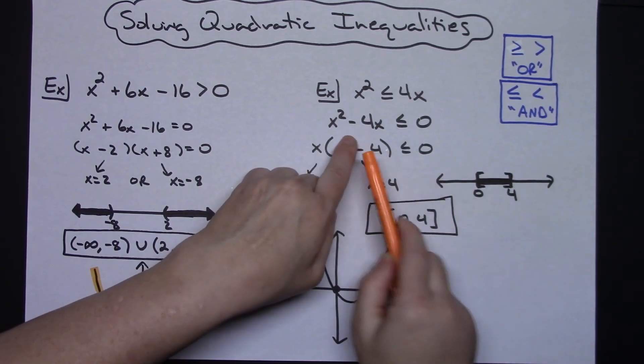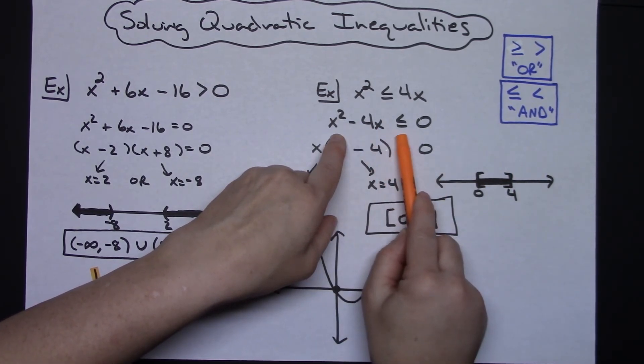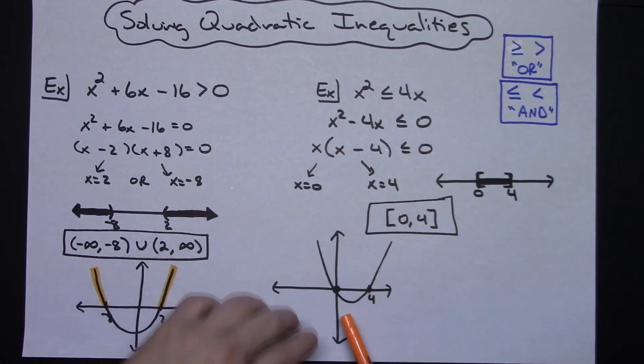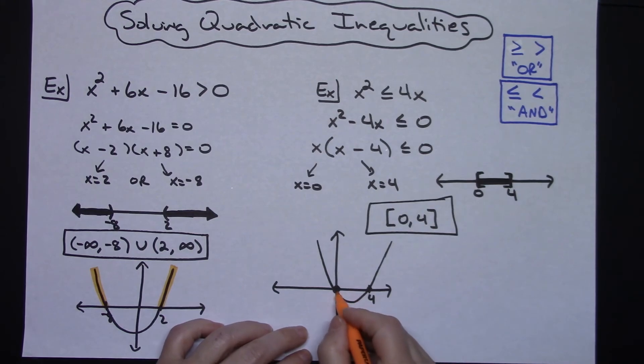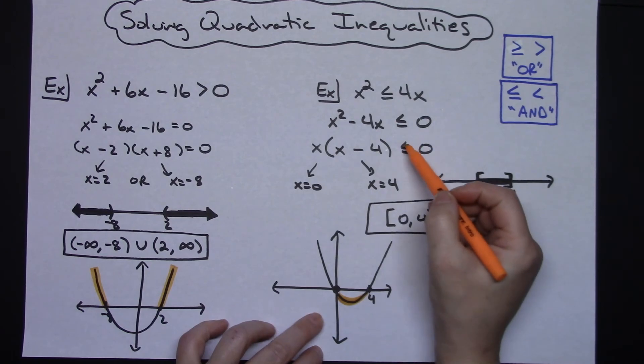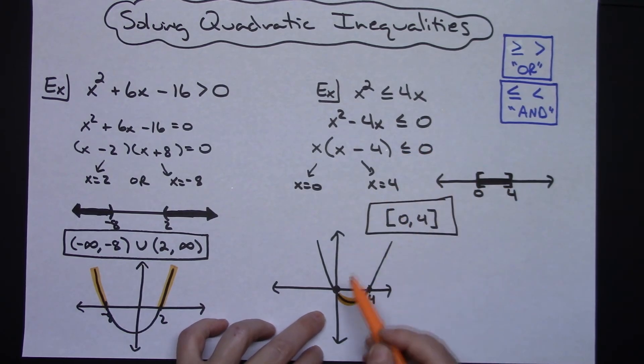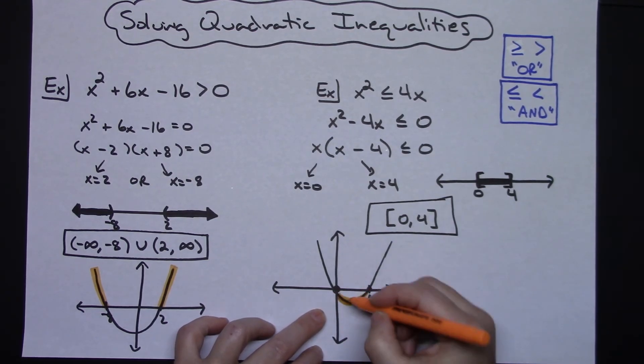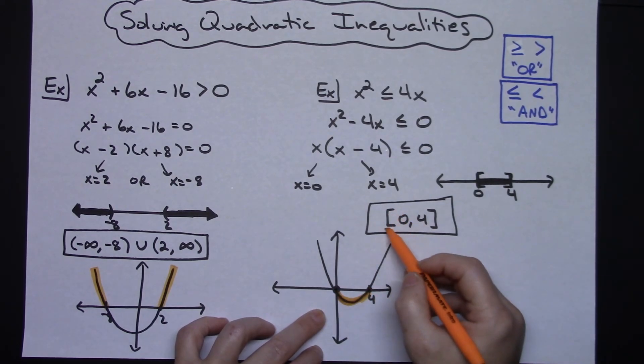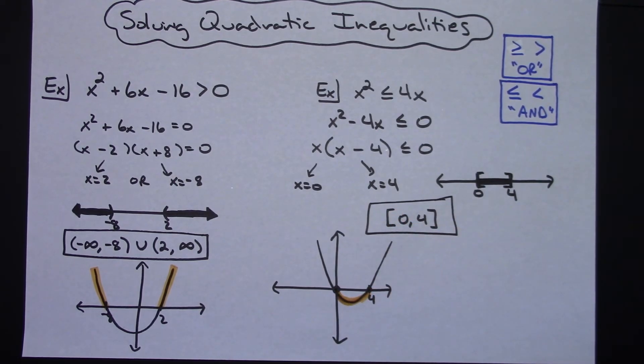Now up here I was looking for where is this quadratic less than or equal to 0. So where is it less than or equal to 0? Where is it below the x-axis? Well, that would be in this section right here, everything in between 0 and 4. And since it's less than or equal to, then it would be equal to 0 at 0 and equal to 0 at 4. So that's why I would definitely include those points. So that's why we have the square brackets.